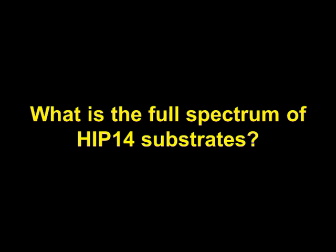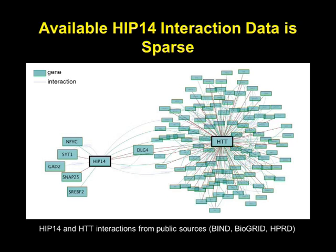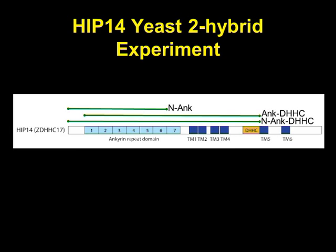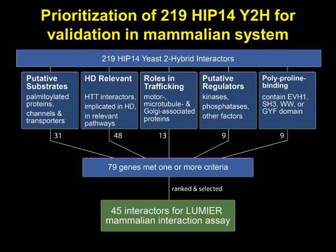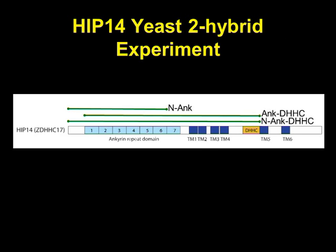In an effort to define these pathways, we've been working to detect the full substrate spectrum involved with HIP-14. Looking at interactions from public sources — Bind, BioGrid, HPRD — there is a remarkable paucity of known interactors for HIP-14 compared to huntingtin. So we've been involved in an automated yeast-two-hybrid screen with 17,000 cDNAs, in collaboration with Eric Wanker, using different baits covering different parts of HIP-14 from the ankyrin repeats all the way to the catalytic site, and we've identified a large number of interactors.